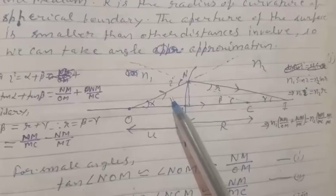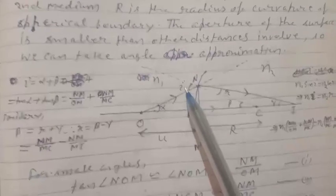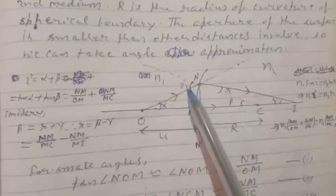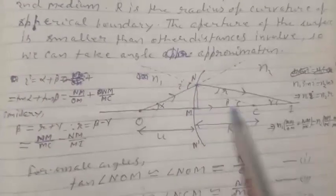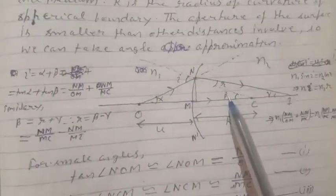An object is placed in front of this curved boundary surface, and an image is formed on the other side. In this case, one medium is rarer and the other is denser. Because the aperture is small, we can apply the angle approximation. From the rules of geometry, i equals alpha plus beta, where i is the exterior angle and alpha and beta are the interior angles of the triangle.